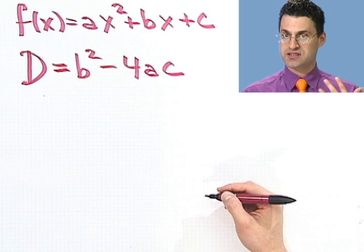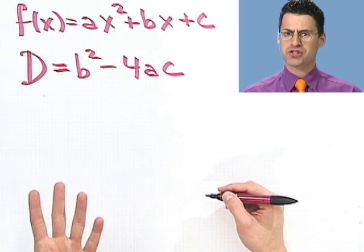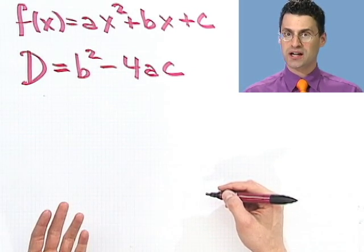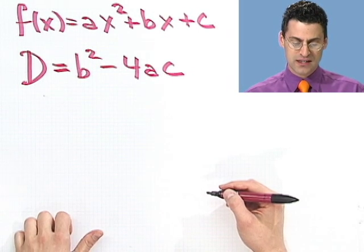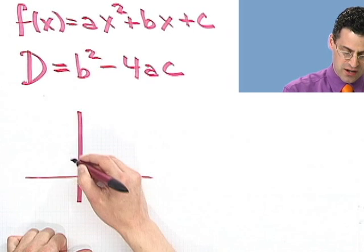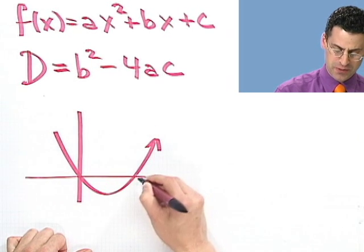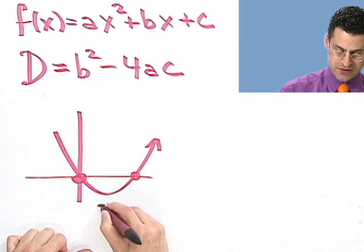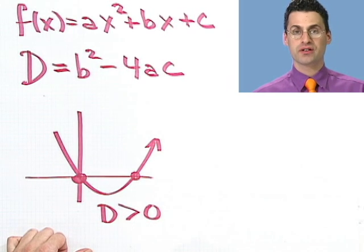you can actually get and sketch a pretty accurate picture of what the graph of the function would look like because all you have to do is say, okay, first of all, is it going to cross in two places, which would be where the discriminant is positive because I'd have two real solutions.